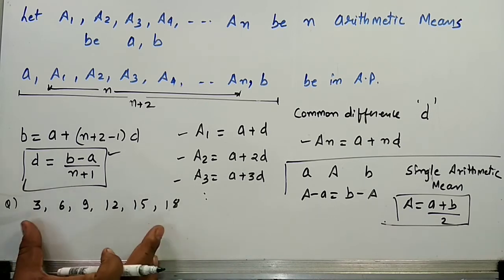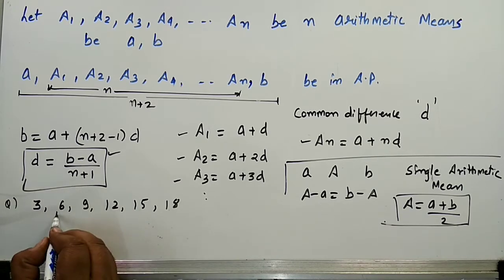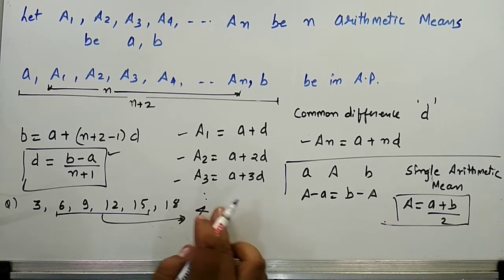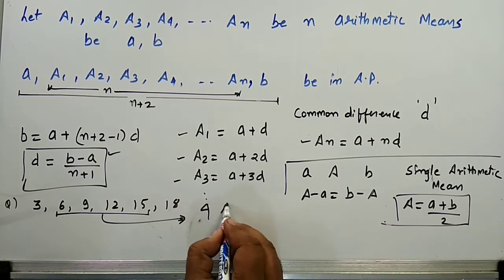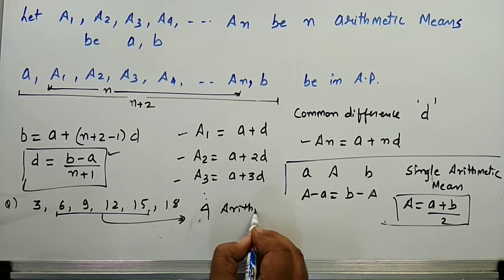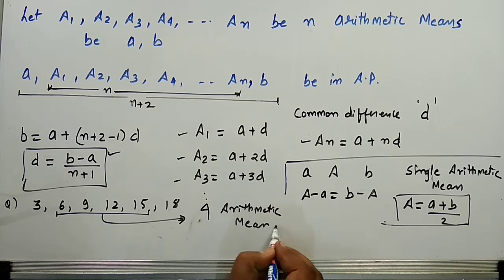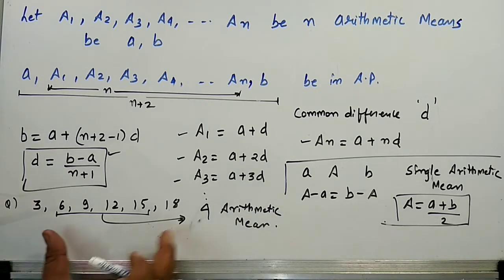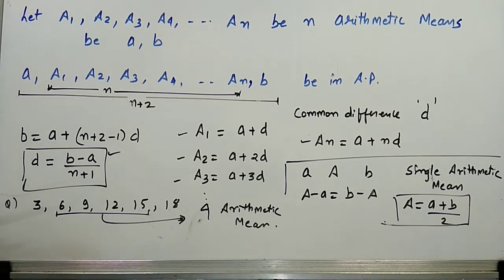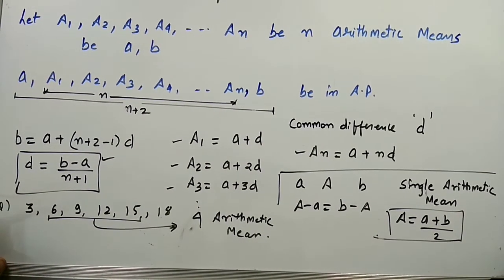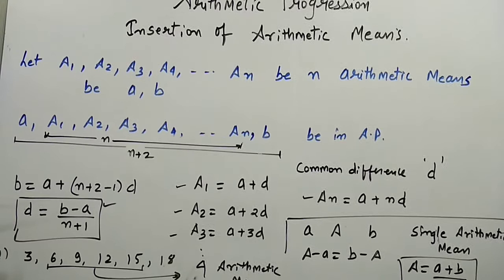Look, if you have an arithmetic sequence like 3, 6, 9, 12, 15, 18, then in between 3 and 18 we have 4 arithmetic means. So let's do some problems based on insertion of arithmetic means between two given numbers.